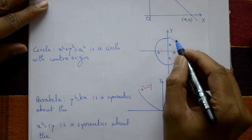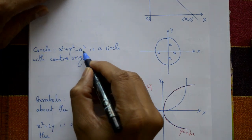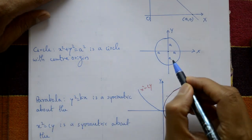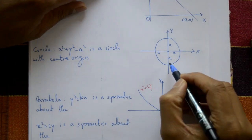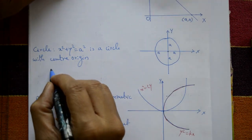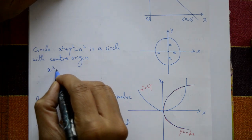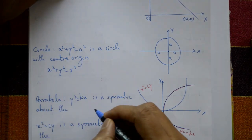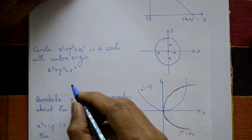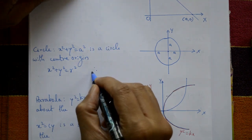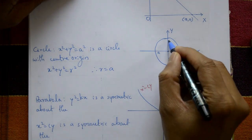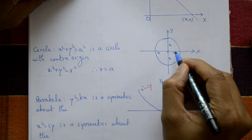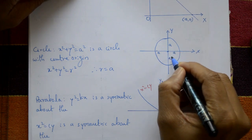Next is a circle: x squared plus y squared equals a squared. This is a circle with center at the origin. Generally, the circle equation is x squared plus y squared equals r squared, where r is the radius. Here r squared equals a squared, so r equals a. This radius a goes from the origin to any point on the circle.